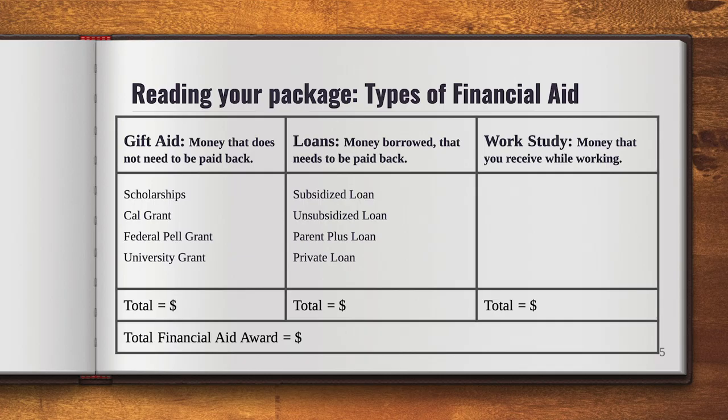There is also work-study, which is a federal program where you work and earn money through a job. It's not an upfront gift or loan — you're earning the money as you work. That's also included as part of your financial aid package total. You total all three different types of financial aid, and then add those together to get your total financial aid package.